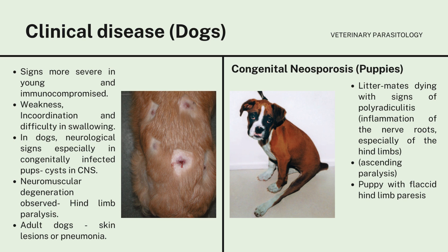The clinical disease in dogs shows signs that are more severe in young and immunocompromised animals. It shows weakness particularly in the neck, incoordination and difficulty in swallowing, and also neurological signs especially in congenitally infected pups with cysts in the central nervous system. Neuromuscular degeneration is also observed, including hind limb paralysis. In adult dogs, it may develop skin lesions or pneumonia. In puppies, littermates may die with signs of polyradiculitis or inflammation of the nerve roots, especially of the hind limbs. Puppies show signs of paralysis of the rear limbs at 3 to 8 weeks of age, followed by ascending paralysis.